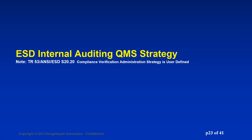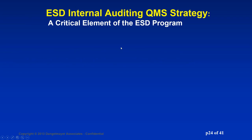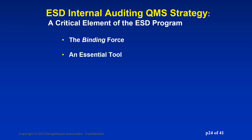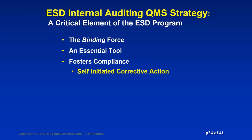Internal auditing — the QMS strategy — is the secret sauce. I'll give you a brief overview. S-2020 tells you that you need to put together a compliance verification plan, and the strategy and details are user-defined. This is one way we have found to be very effective. I get very enthusiastic about this topic because the internal QMS strategy is really the binding force that brings the program together. It's an essential tool that will foster compliance, and if you do it in a constructive way, it will trigger self-initiated corrective action.